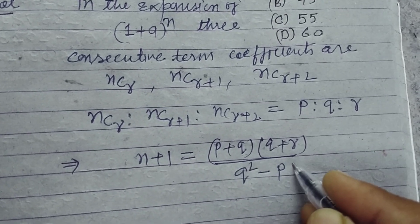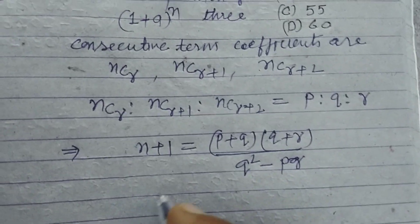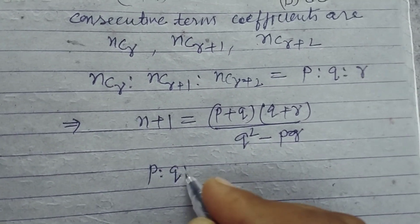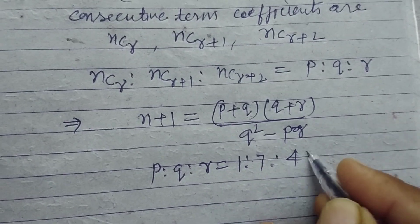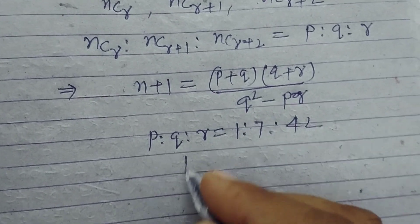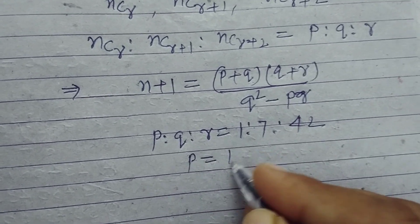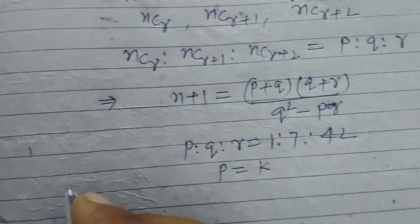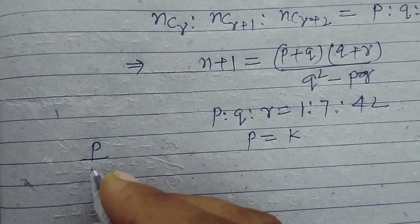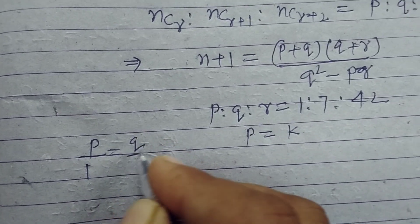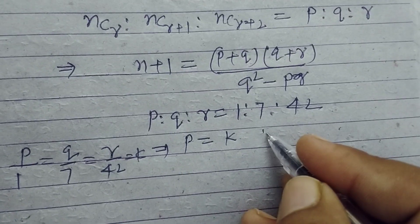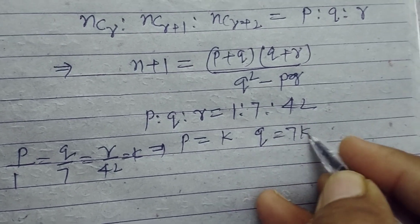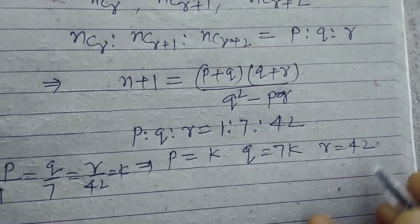Here the ratio is given as P:Q:R equal to 1:7:42. So from here, taking P over 1, Q over 7, R over 42 equal to K, then P equals K, Q equals 7K, and R equals 42K.